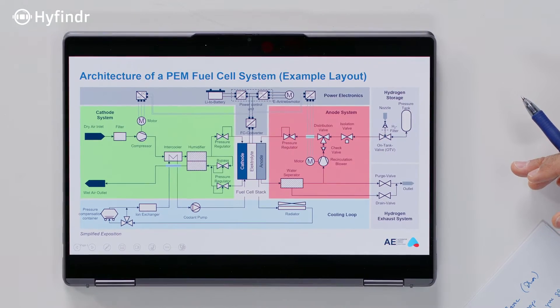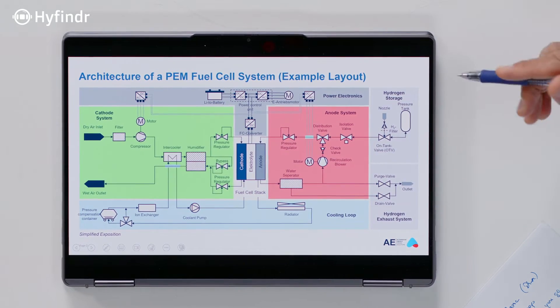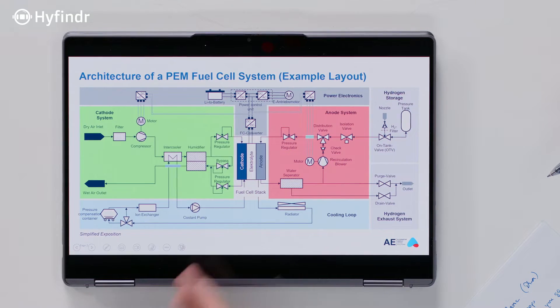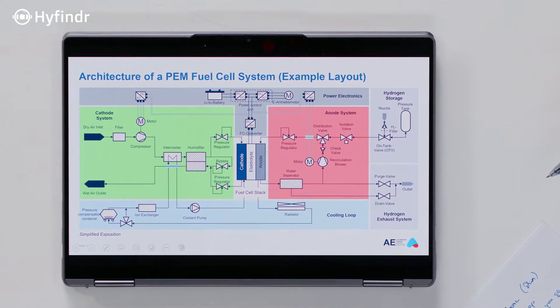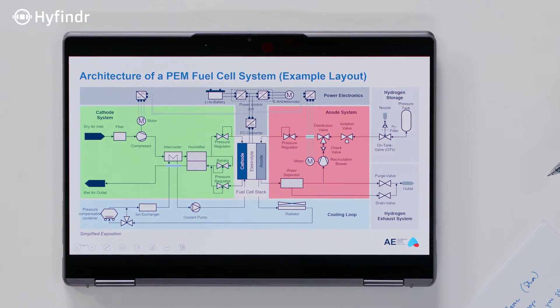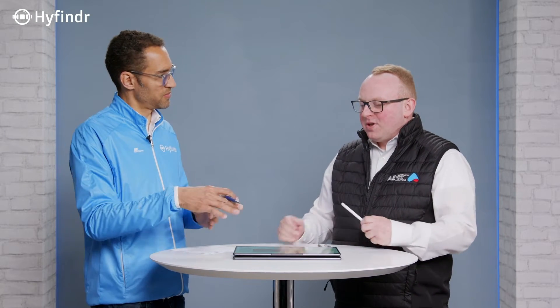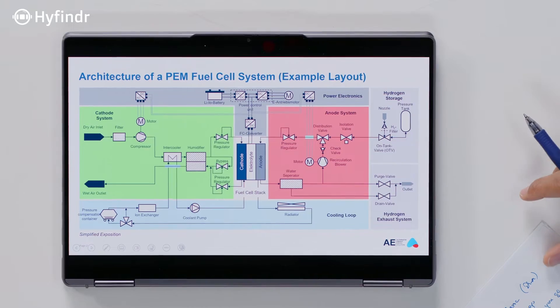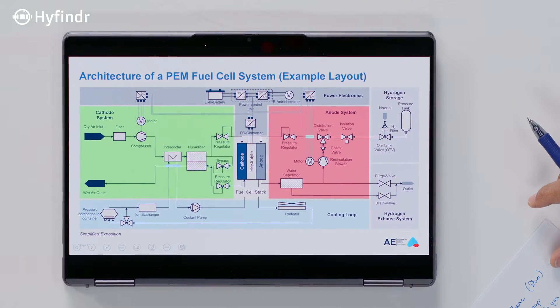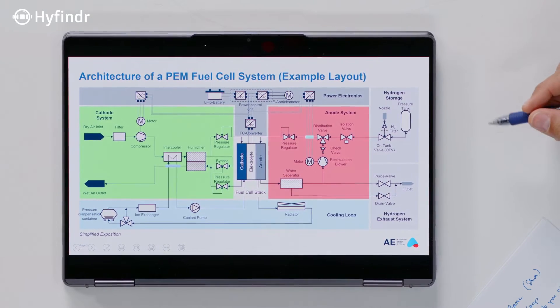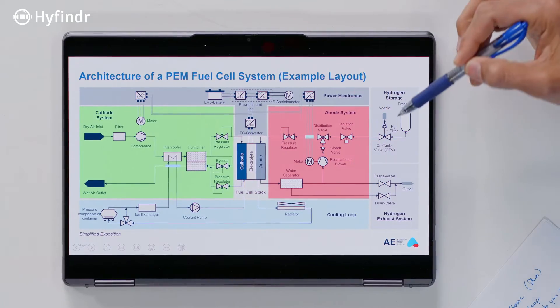Let's have a look at the next page — this looks more complicated. This is the balance of plants, and we can see the whole system including the balance of plants in a P&ID — a piping and instrumentation diagram. What exactly is the balance of plants? The balance of plants contains all components in the system: the anode system, the cathode system, and also the cooling system to run the fuel cell.